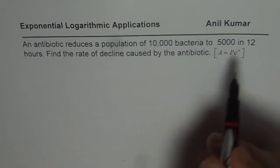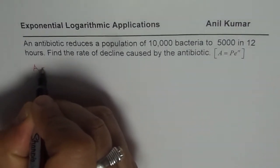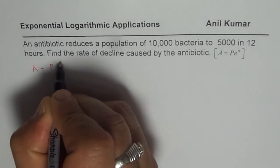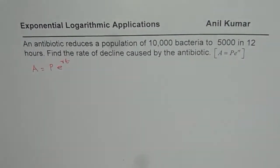The formula is A equals P times e to the power of RT. This is the continuous rate.